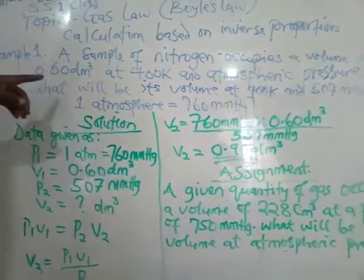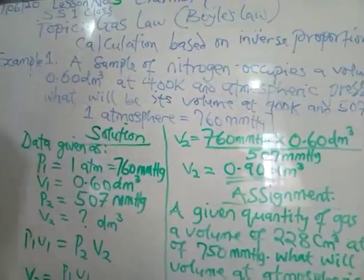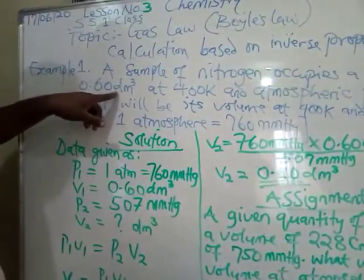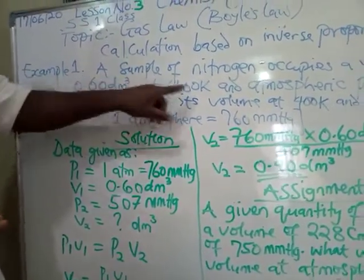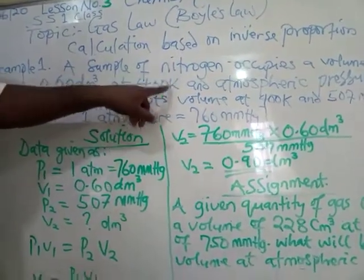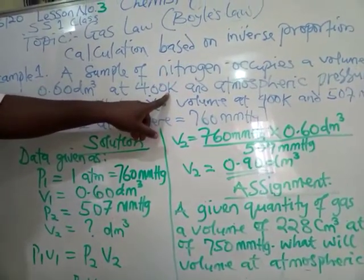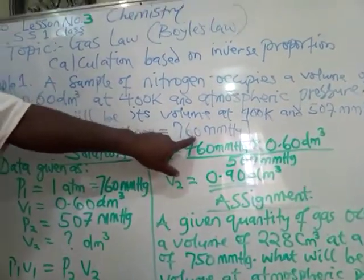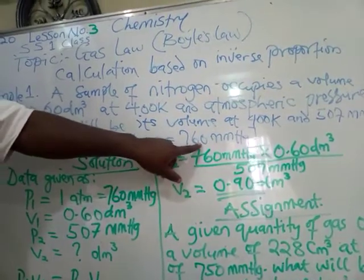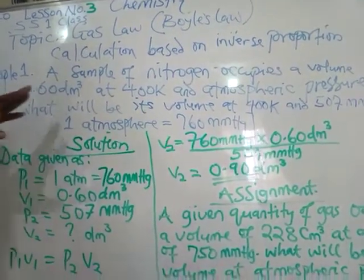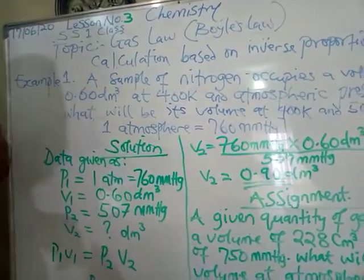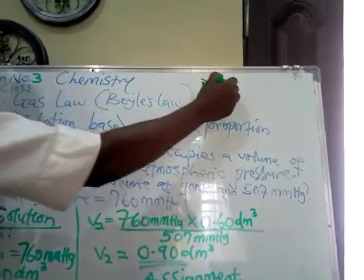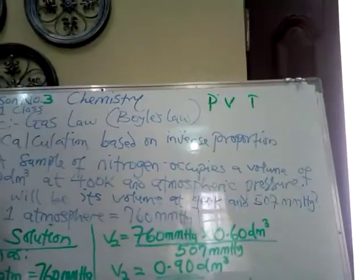I said when you have one atm it is always equal to 760 millimeter mercury for the purpose of conversion. dm³ and cm³ are units of volume; kelvin (K) or degree Celsius are units of temperature; millimeter mercury and newton per meter squared are units of pressure. In Boyle's Law we always have a combination of pressure and volume while temperature T is always constant.